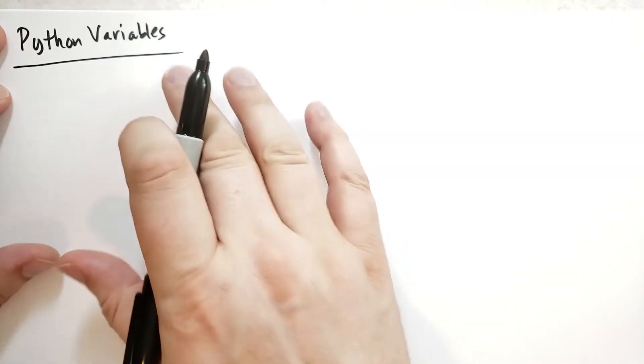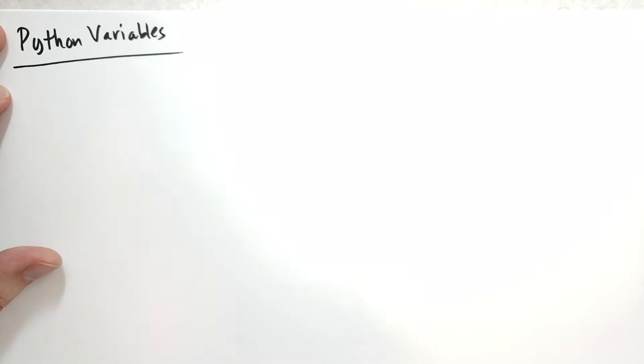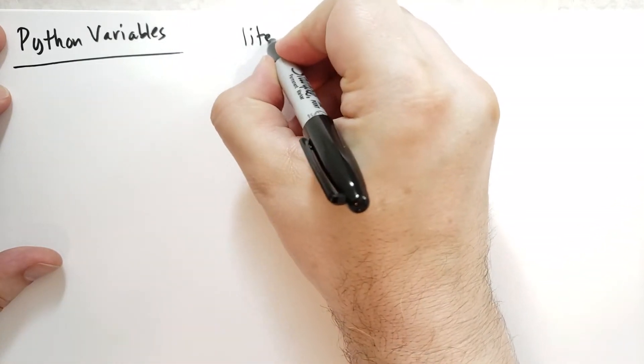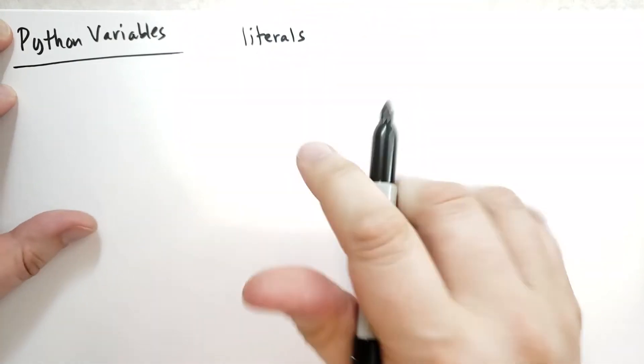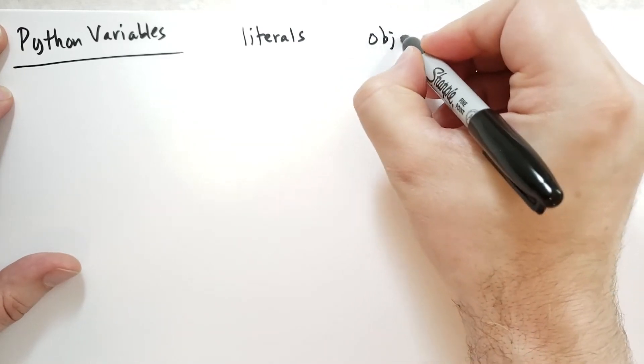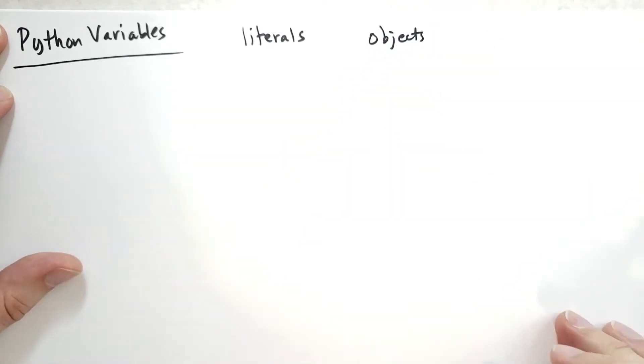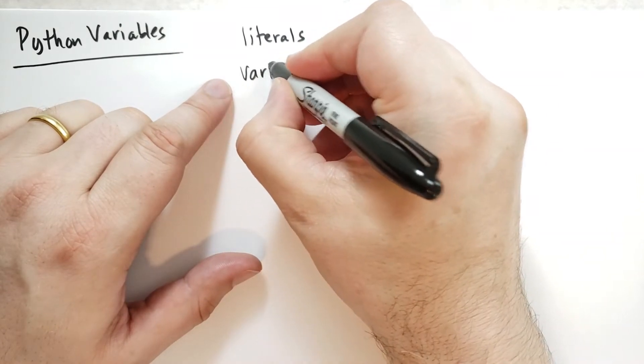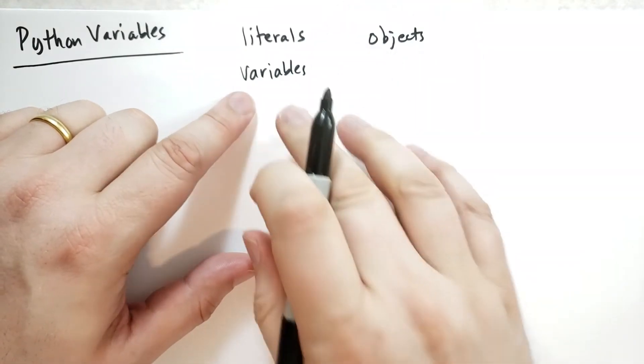So in a Python program, remember that we need to organize the memory, and we've already talked about using literals, and there's these things called objects that I haven't introduced yet. I'll introduce that in a later lecture. But variables are one of the principal ways that we use to organize memory.